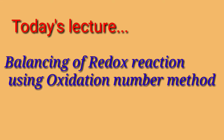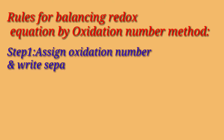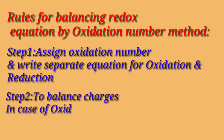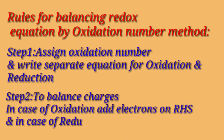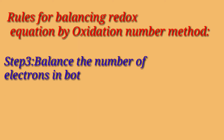Let's get started. Rules for balancing redox equations by the oxidation number method. First step: assign oxidation numbers and write separate equations for oxidation and reduction. Second step: in case of oxidation, add electrons on the right-hand side; and in case of reduction, add electrons on the left-hand side.